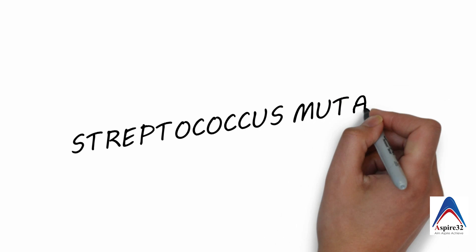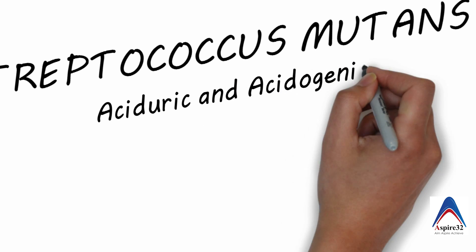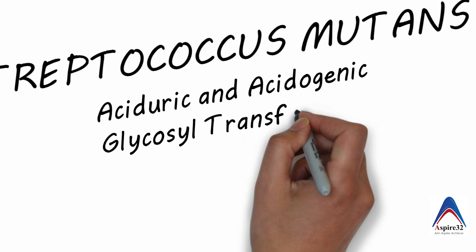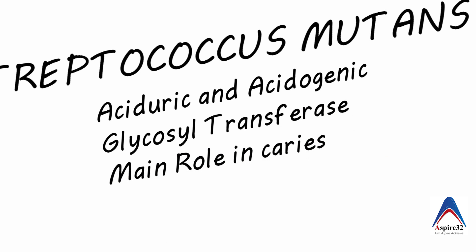Streptococcus mutans is one of the most important organisms involved in caries formation. It is both acidogenic and aciduric, meaning it can survive in an acidic environment and even produce acid. It has an enzyme called glycosyltransferase, which is involved in the breakdown of sucrose and forms dextran. This substance allows the organisms to sustain on the tooth. Therefore, without Streptococcus mutans, caries will not initiate.